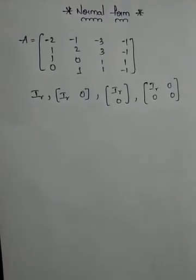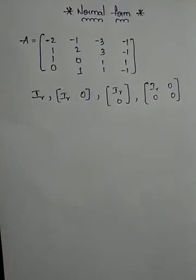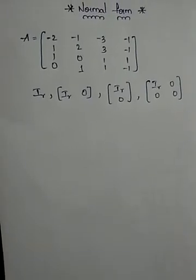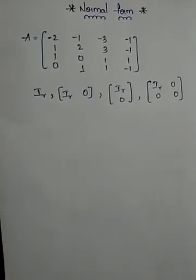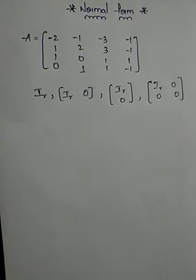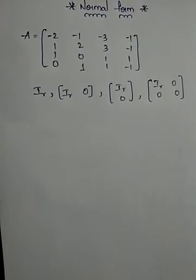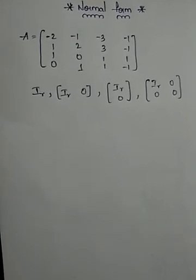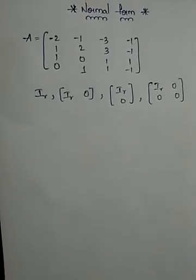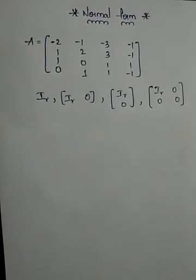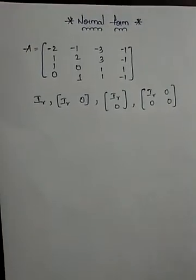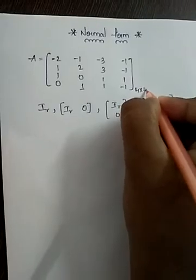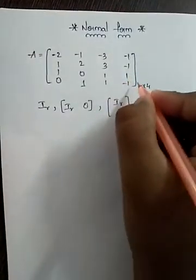Hey friends, today our topic is to find the normal form and to find the rank of a matrix by using the normal form. In my previous video I have already solved one problem. To make it clear, I am solving another problem. The matrix A is a four by four matrix, which means it contains four rows and four columns.